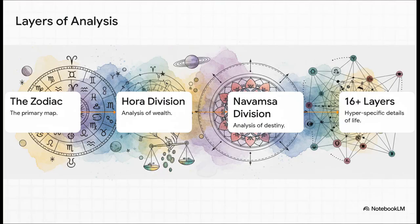So it works like this. You start with the main zodiac map. Then you can divide each section in half to get a chart specifically about wealth. Or you can divide it into nine parts to create what's called the Navamsa chart, which is seen as crucial for understanding relationships and destiny. And it doesn't stop there.